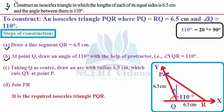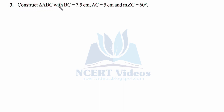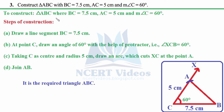Question three: construct triangle ABC with BC equal to 7.5 cm, AC equal to 5 cm, and measure of angle C equals 60 degrees. By now you have observed that we are constructing triangles with an angle between two given sides — that is, the side-angle-side principle. In the previous exercise we used side-side-side, both based on congruence of triangles.